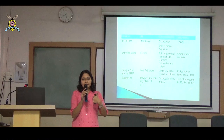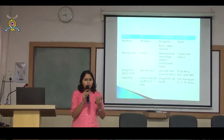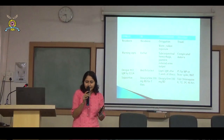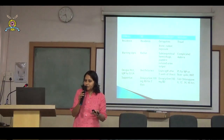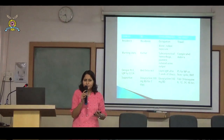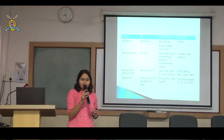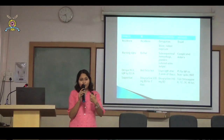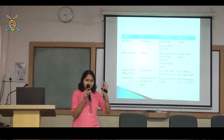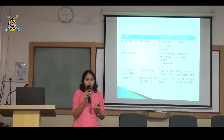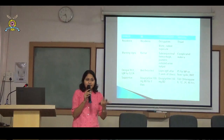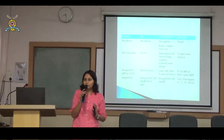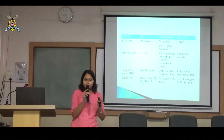Severe dengue includes severe hemorrhage — mucosal bleeding, epistaxis, or bleeding from any site — severe plasma leakage leading to dengue shock syndrome, fluid accumulation in the lungs causing respiratory distress with pleural effusion or pulmonary edema, and significant organ impairment with skyrocketing SGOT and SGPT levels and cardiac involvement. Patients with warning signs or severe dengue require admission. A simple case of dengue without warning signs can be managed on an OPD basis.